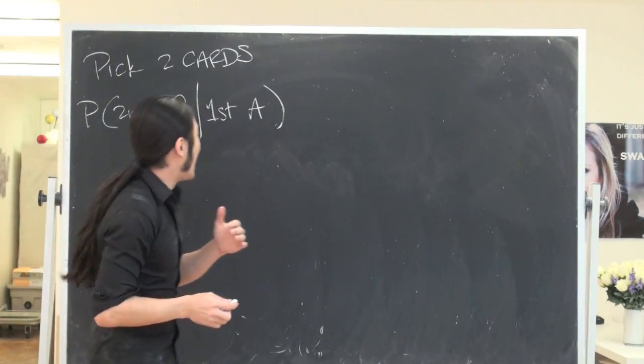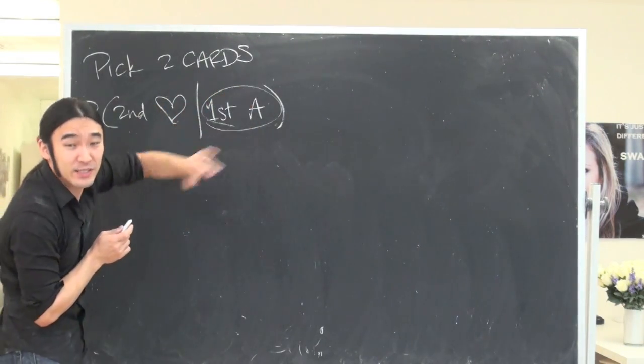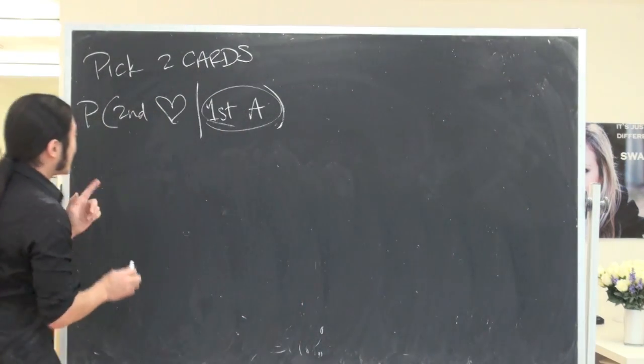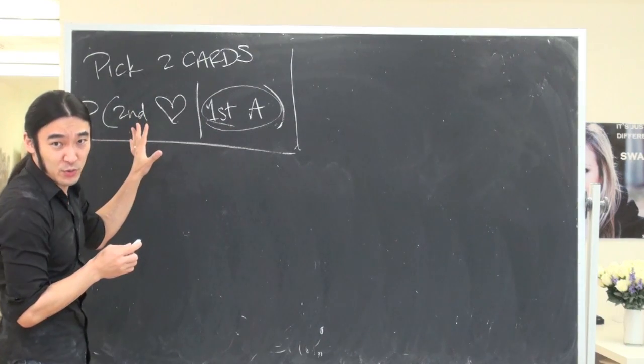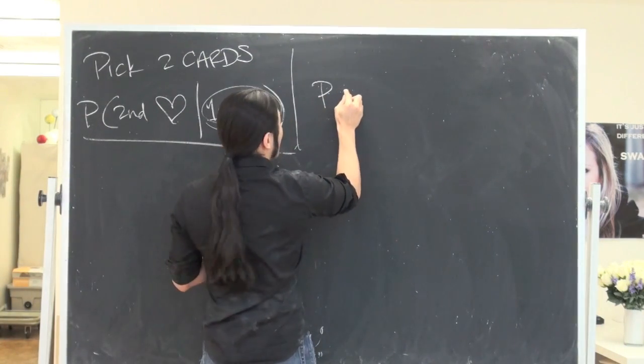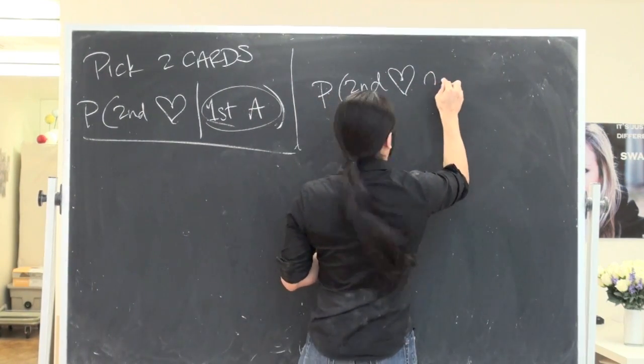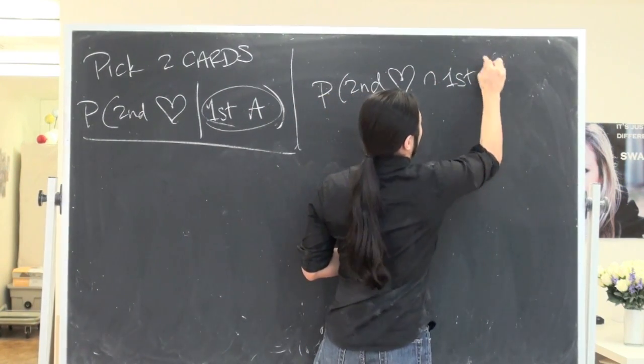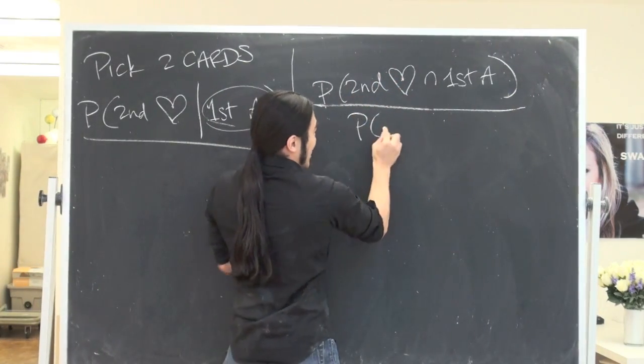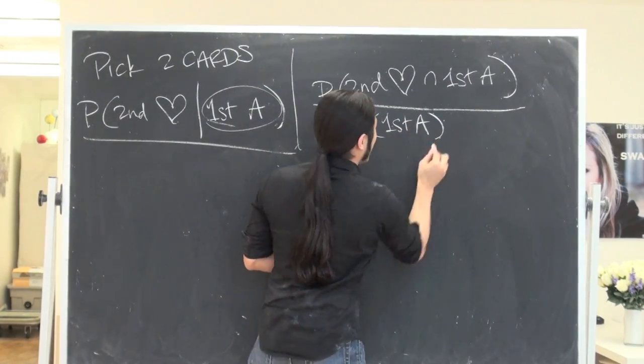There are two ways to do this. One is what I call the high school way, where we kind of take this for granted and work assuming this has already happened. The second one is the brute force way. This probability should be the probability of the second is a heart and the first is an ace, over the probability of just the first being an ace.